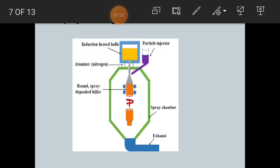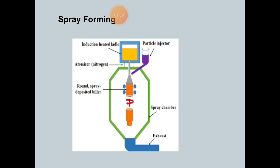These alloys are also introduced here. See the figure. In this figure, there are various parts are given, which is particle injector, induction heated ladle, atomizer with nitrogen, then round spray deposited billet, then spray chamber, exhausts are also given.